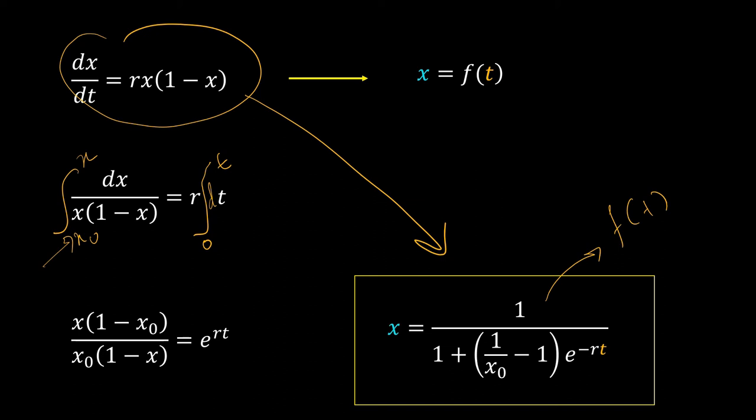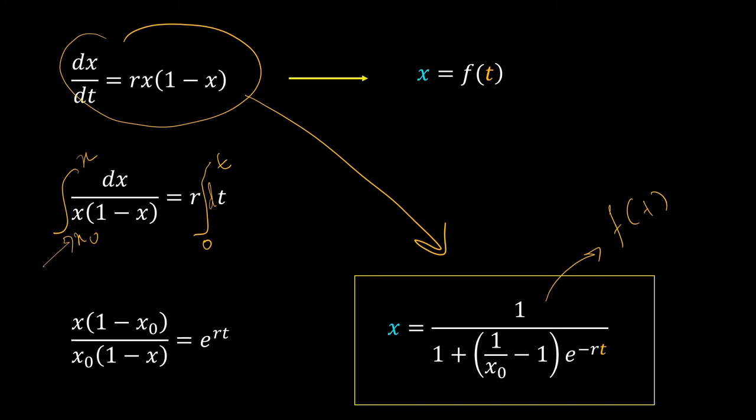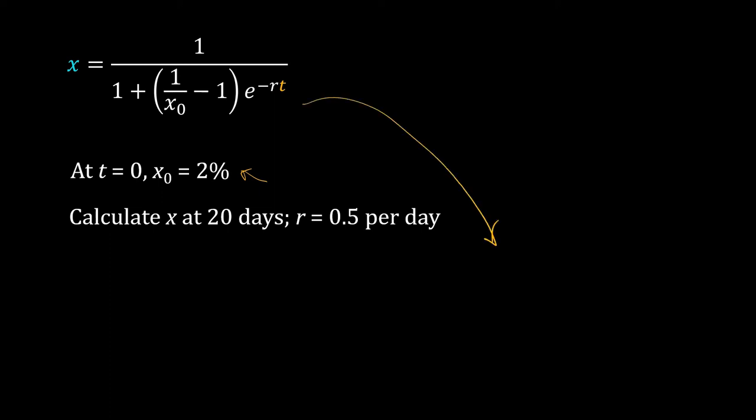Now using this function, I will try to answer questions about this particular problem. You may tell me the initial conditions, like how many people are infected initially. You can tell me the rate of the spread of the disease, and then you may ask how many people will be infected at a particular date. For example, you may have said initially 2% of the population is infected, and you want me to calculate the value of x, the fraction of the population infected on the 20th day, such that r, the rate constant, you have given as 0.5. How can I calculate that? Very easily—plug the numerical values here.